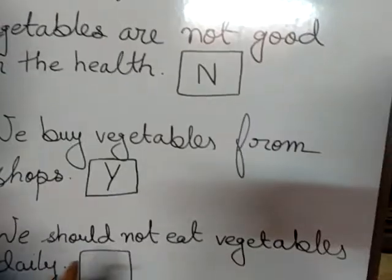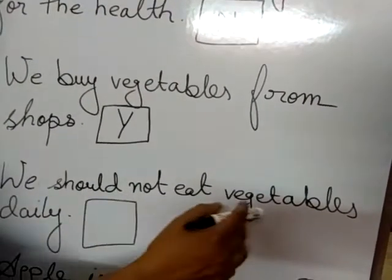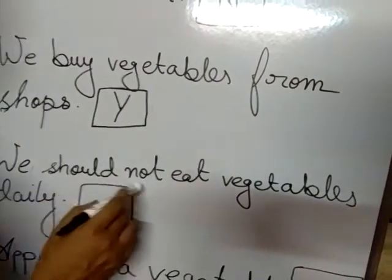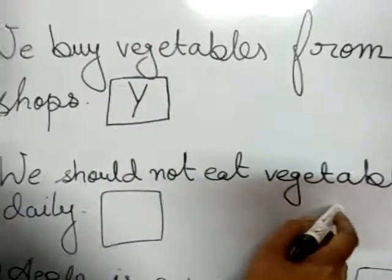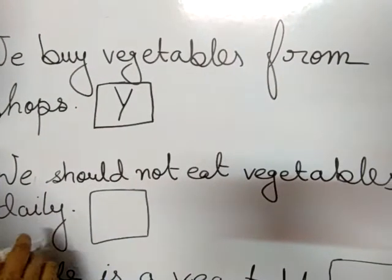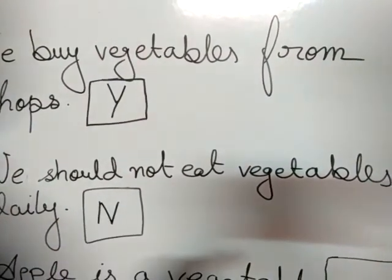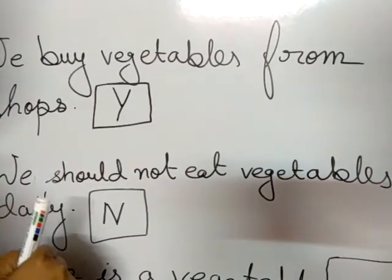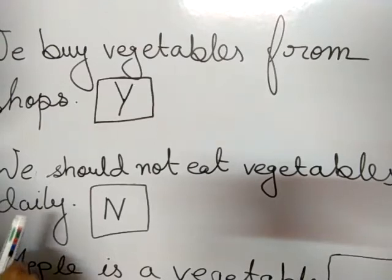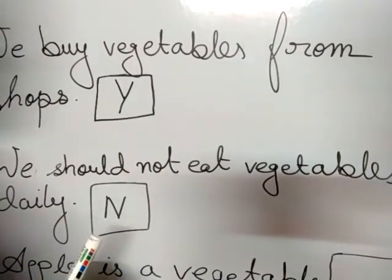Number four: We should not eat vegetables daily. This is a wrong statement, so you write no — N. Always remember, we should eat vegetables daily because vegetables are good for our health.